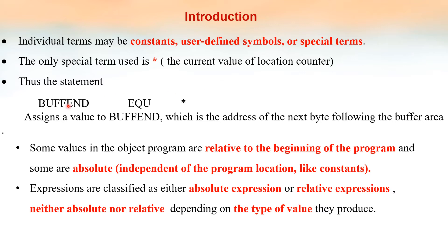The only special term used here is the star symbol. Star denotes the current value of the location counter. For example, consider this instruction: BUFFEND EQU *. EQU is used for equating, which means BUFFEND equals the current value of the location counter. This assigns a value to BUFFEND, which is the address of the next byte following the buffer area.